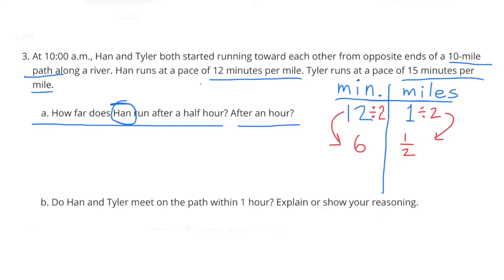They tell us that Han runs at a pace of 12 minutes for one mile. 12 divided by two equals six, and six times five gets me to 30 minutes, which is a half an hour. So one mile divided by two gets a half mile, and a half mile times five gets two and a half miles. Han can travel two and a half miles in a half an hour — on this table, 30 minutes, Han can go two and a half miles.